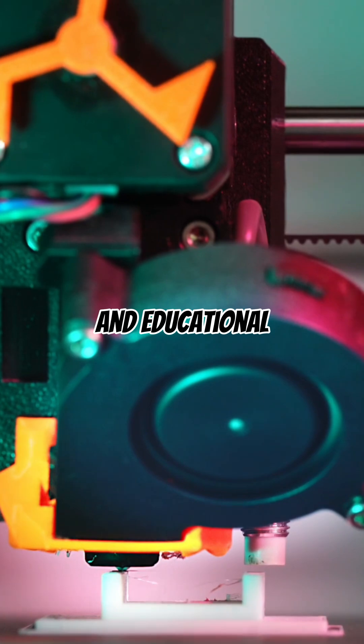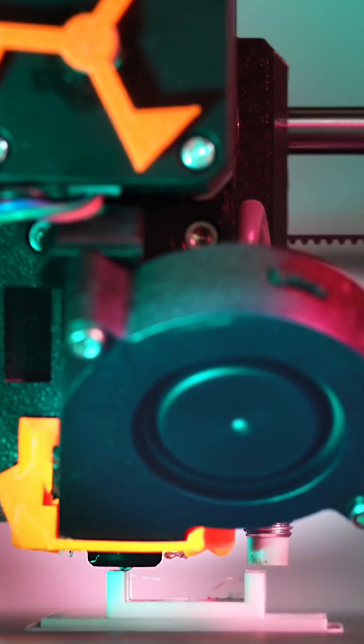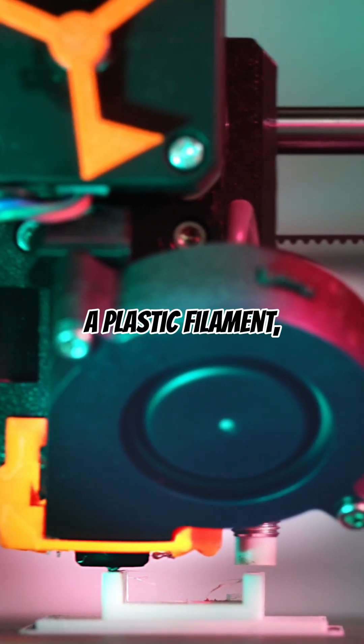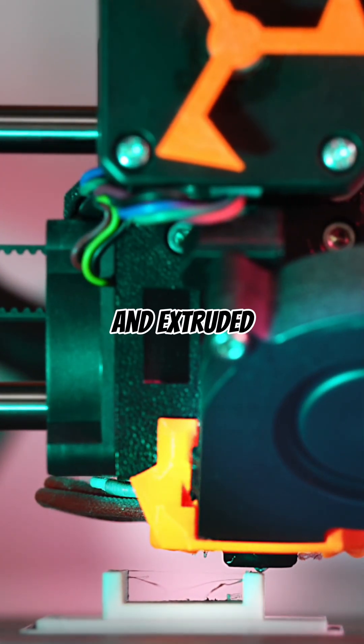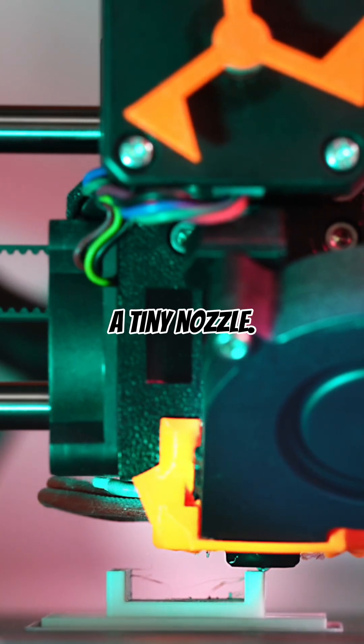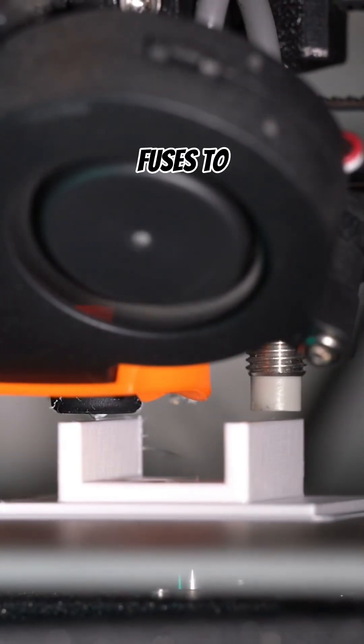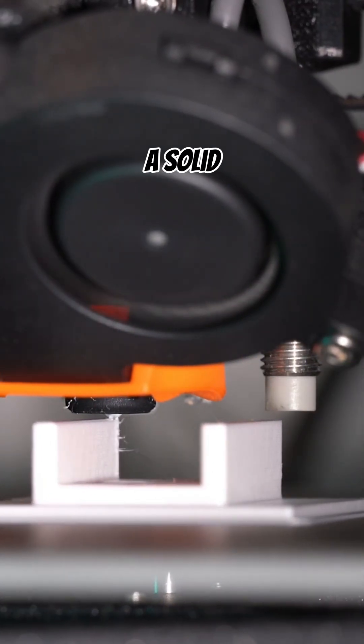Most home and educational 3D printers use fused deposition modeling, where a plastic filament, often made of biodegradable PLA, is heated and extruded through a tiny nozzle. Each thin layer fuses to the previous one, forming a solid structure.